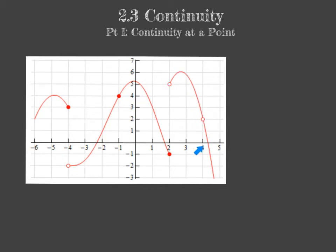We keep going and then we have a hole in our graph when x is 4. Those are three big issues: when x is negative 4, when x is 2, and when x is 4. There's an issue at each of those points because it's not smooth sailing — we can't trace this graph without running into a problem. Those are points of discontinuity. We would say the graph is discontinuous at x equals negative 4, x equals 2, and at x equals 4.